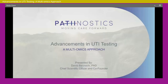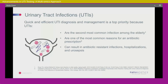Thank you. I'd like to thank Thermo Fisher for providing this opportunity to discuss advancements in urinary tract infection testing. UTIs are a very important clinical problem, and especially with our aging population it's becoming more and more of an issue — the second most common infection among the elderly and one of the most common reasons for antibiotic prescriptions. The problem really comes from the bad outcomes associated with management of these urinary tract infections, especially in the elderly over time. We see these bad outcomes manifest as increasing numbers of antibiotic-resistant infections, increased hospitalizations, and urosepsis.